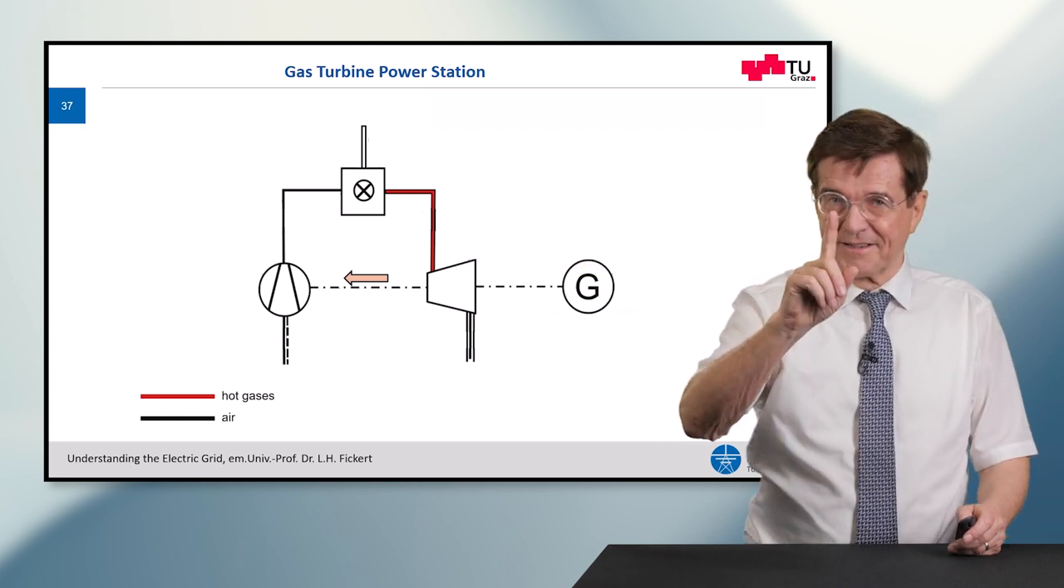Type number three of conventional thermal power stations is the gas turbine power station. Here we can see to my right side the simplified diagram of a gas turbine. Let's assume that this turbine is running, and that is crucial as you will see a little bit later. The turbine compresses the air, the fresh air supply, and puts this fresh air supply into the combustion chamber.